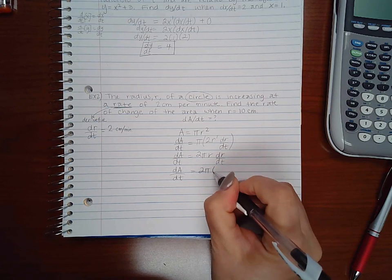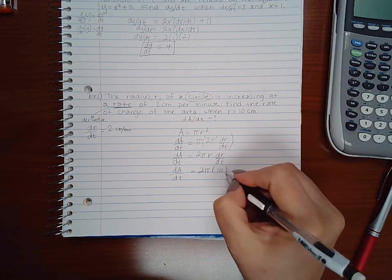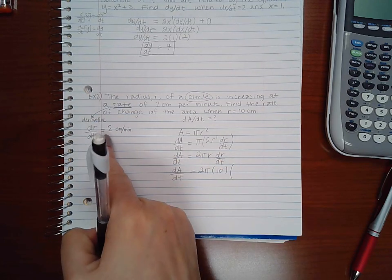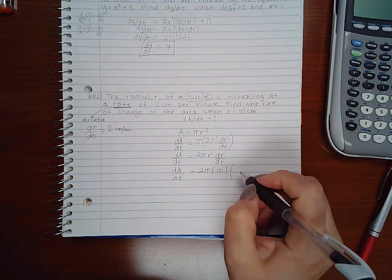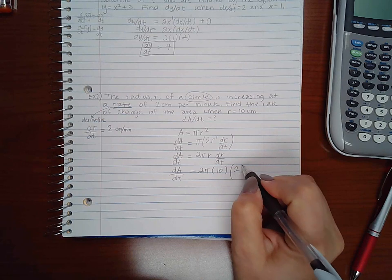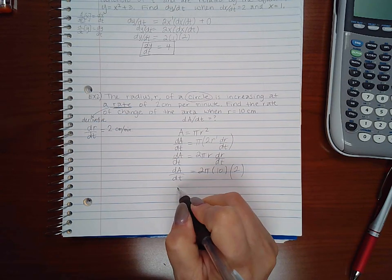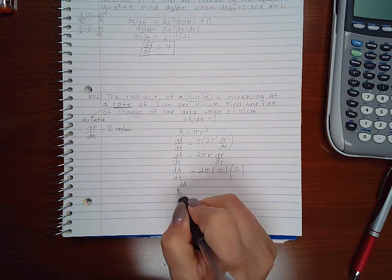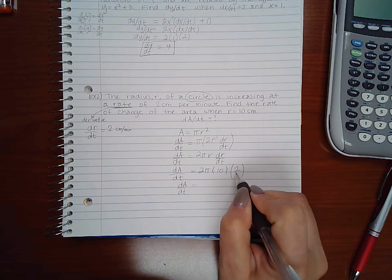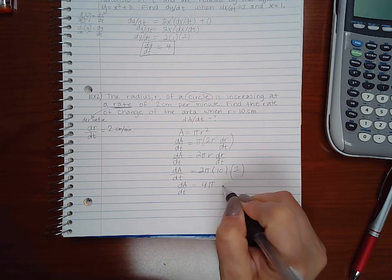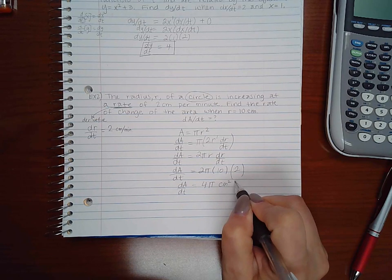Because r is 10 centimeters and dr/dt is 2 centimeters per minute, which means that da/dt will be 40 pi centimeters squared per minute.